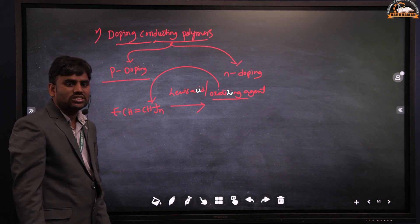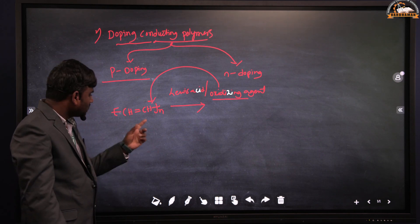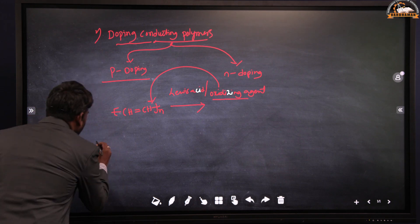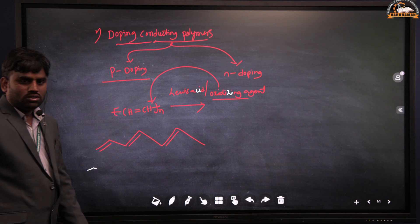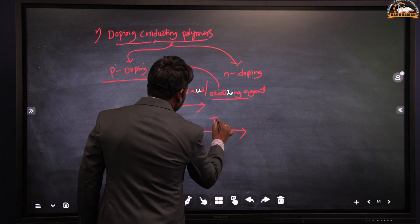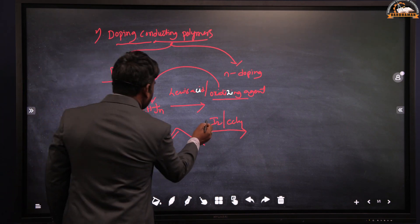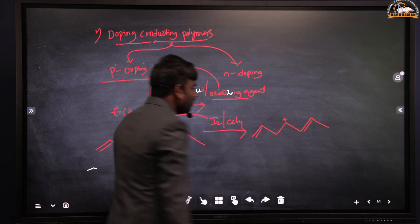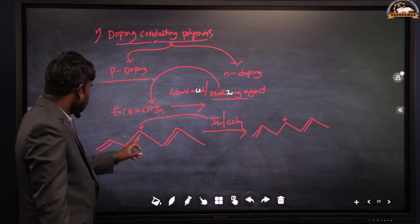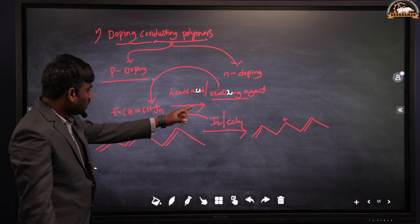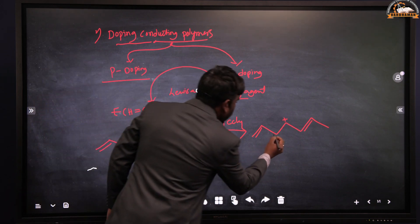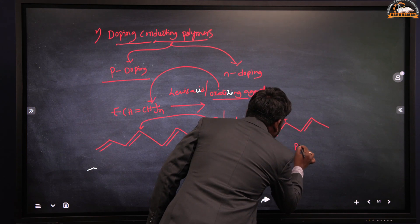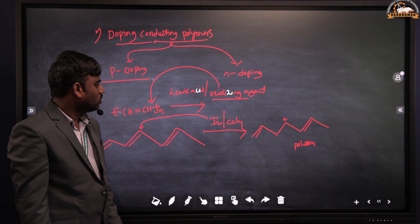Once polyacetylene undergoes oxidation — that is, loss of electrons — it gets a positive charge on the polymer chain. For example, adding Lewis acid such as iodine or I₂Cl₄: while adding this oxidizing agent, loss of electrons takes place from the polymer chain. The oxidizing agent takes an electron from the double bond carbon, that carbon gets a positive charge with one electron remaining — this is known as a polaron.